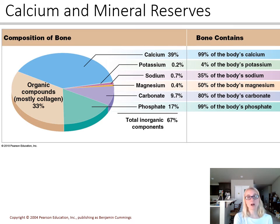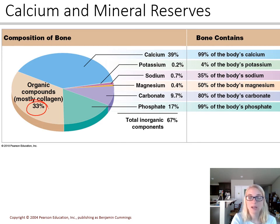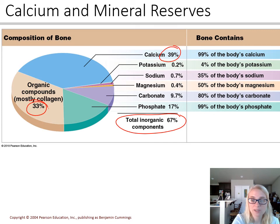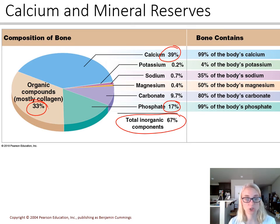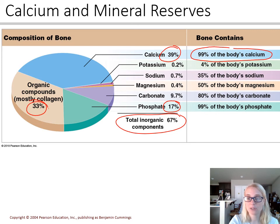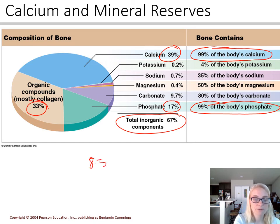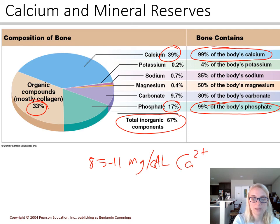Here's a breakdown of calcium and mineral reserves. About one third of bone is organic compounds — mostly collagen — and two thirds is salts and minerals, a large proportion of which is calcium and phosphate. Looking at whole-body storage, 99% of the body's calcium is stored in bones, and 99% of the body's phosphate is stored in bones. Interestingly, that 8.5 to 11 milligrams per deciliter we regulate so carefully represents only 1% of the body's total calcium.